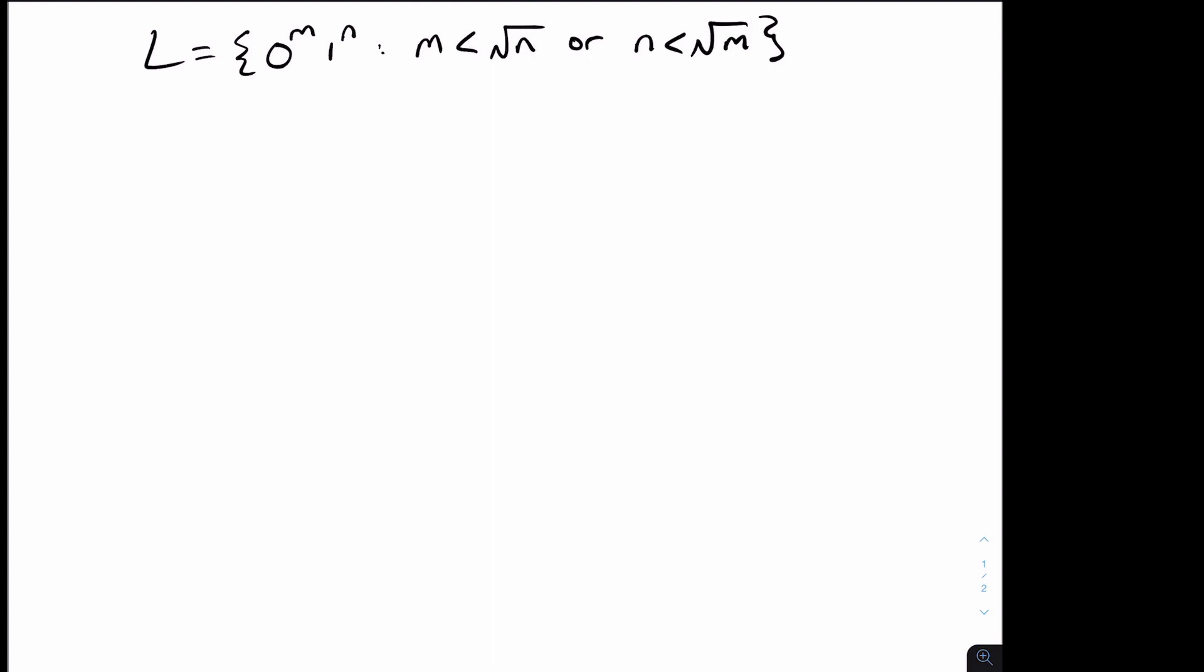Hi, and welcome to another edition of Easy Theory. So today we're going to be looking at this language L, which is all the strings of the form zero to the m, one to the n, where m has fewer than square root n ones.